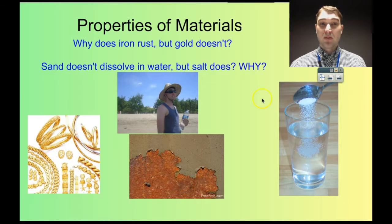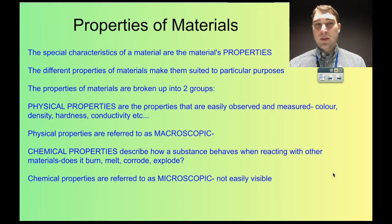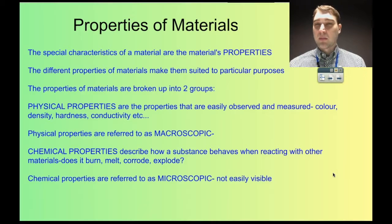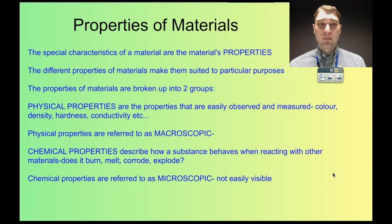We've got salt and sand. Here's me on a beach with some sand behind me, and here's some salt dissolving. What would happen if sand dissolved? What would happen at a beach? Just things to think about. So we're talking about properties and there are two big groups: physical and chemical properties. We're going to focus today on just looking at physical properties; chemical properties we'll look at all the way through chemistry.